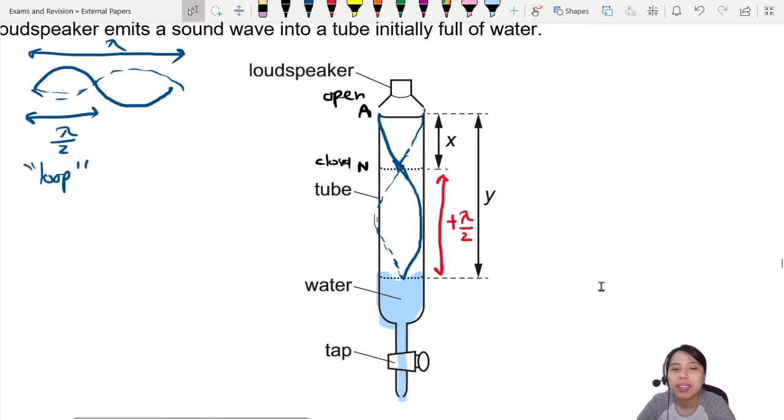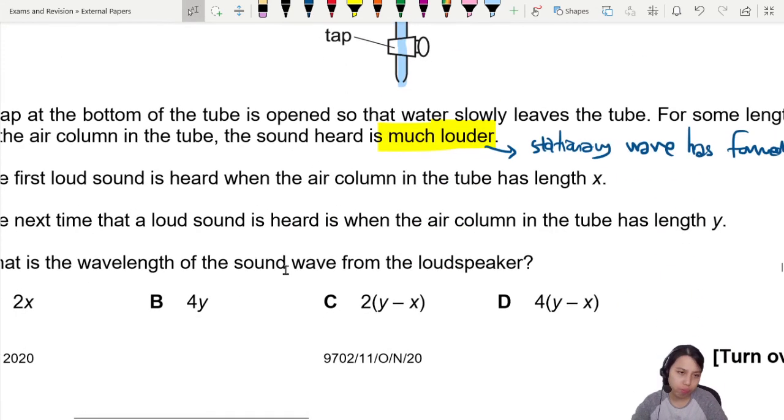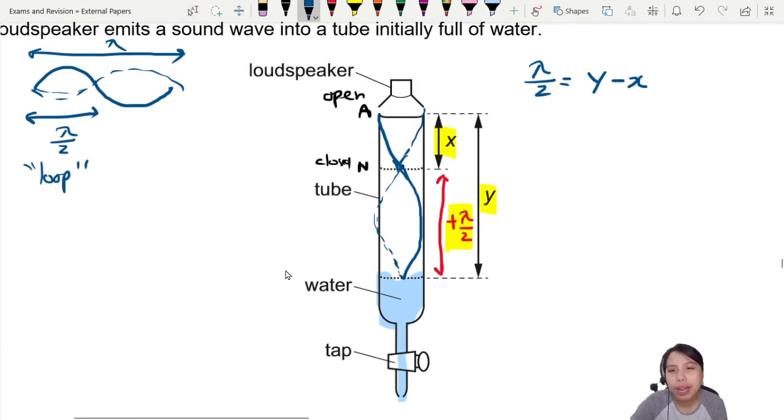But there's one clue: you have x, you have y, and you know that lambda over 2 is the change in distance. So maybe that's a big clue there. Lambda over 2 is that red arrow distance, which is also y minus x. The distance increase is lambda over 2, so that's y minus x. We need wavelength, so lambda will be 2(y minus x).